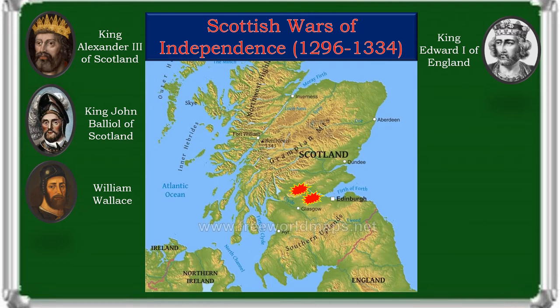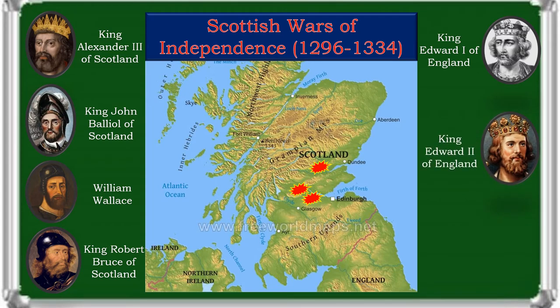Robert the Bruce, grandson of the claimant, was appointed as the guardian of the realm. On 25 March 1306, Bruce was crowned as king. However, Edward's forces overran the country after defeating Bruce's small army at the Battle of Methven. Despite the defeat, Robert's support slowly strengthened, and by 1314, with the help of leading nobles, only a few castles remained under English control. Edward I had died in 1307. His heir, Edward II, moved an army north to break the siege of Stirling Castle and reassert control. Robert defeated that army at the Battle of Bannockburn in 1314, securing de facto independence.